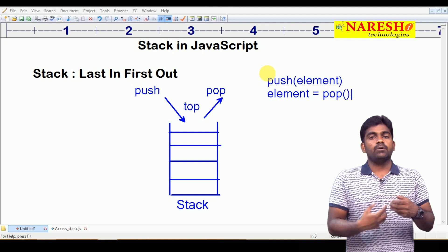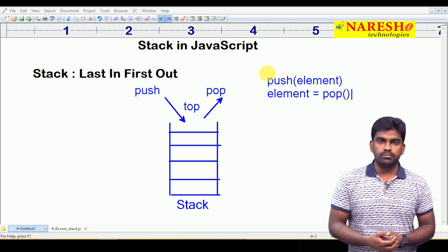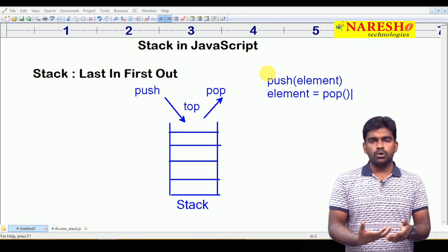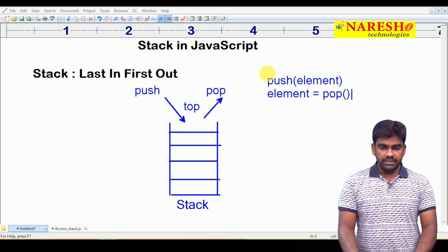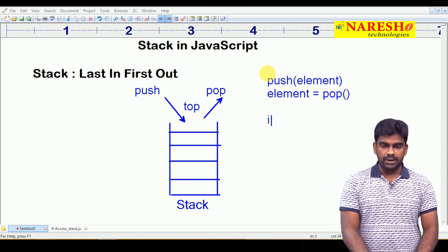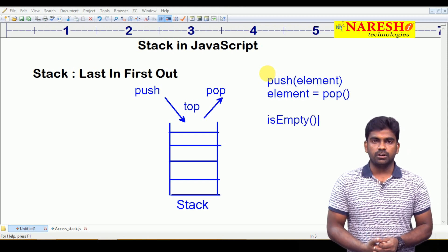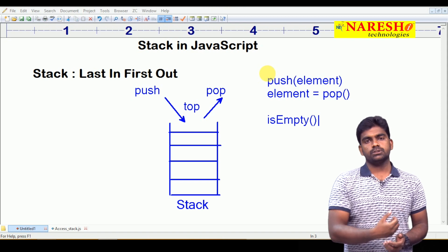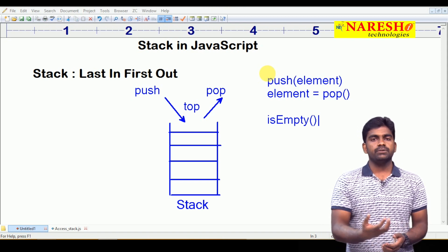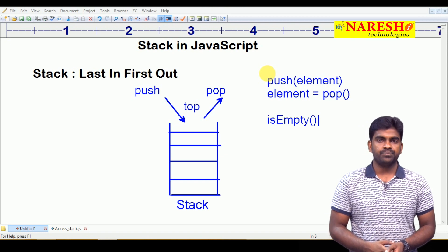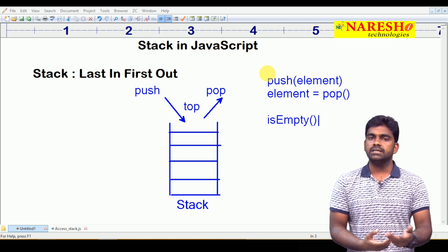Before going to pop the element we have to check whether that element is present or not to pop. Suppose if stack is empty we cannot perform pop operation. We are checking that is empty or not. It will return a Boolean value, true if the stack is empty. If it is not empty it will return false.